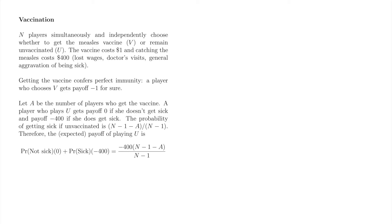A player who remains unvaccinated and does not become ill receives payoff zero, because she does not incur the cost of the vaccine, and does not incur the cost of the measles. A player who remains unvaccinated and does catch the measles receives payoff minus 400, because she does not incur the cost of the vaccine, but does incur the cost of the measles. An unvaccinated player's expected payoff is therefore -400 times (N-1-A)/(N-1).